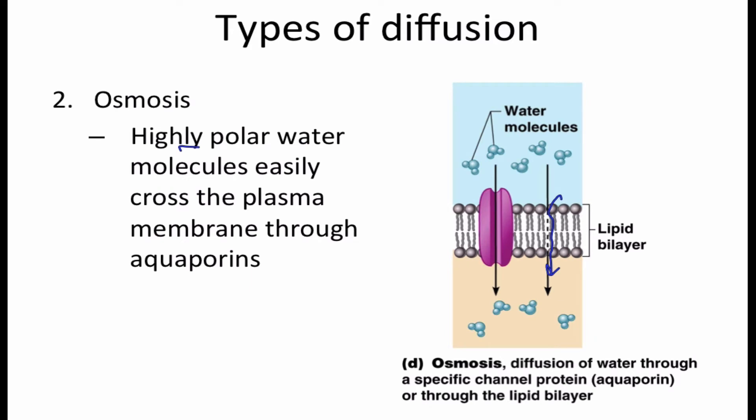Osmosis is another type of diffusion. Osmosis is when you have water, which water molecules are polar. Polar means that they're going to have slightly positive and negative sides, the polarity. So water can easily move across the plasma membrane through aquaporins. Aquaporins are specific channel proteins that are through the phospholipid bilayer.